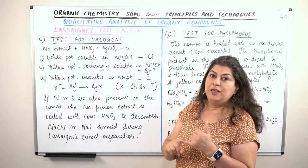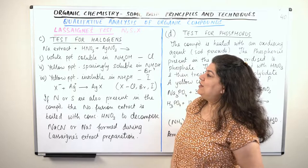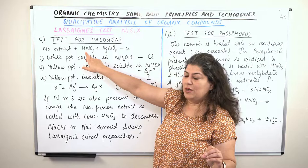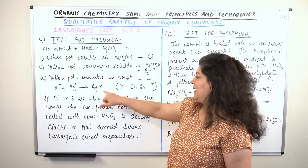The halogens that we test for are chlorine, bromine, and iodine. All three have some differences by which we can identify which halogen is present. When you use the sodium extract, you acidify it with nitric acid and make it react with silver nitrate. It results in the formation of a silver halide.